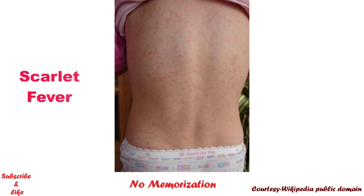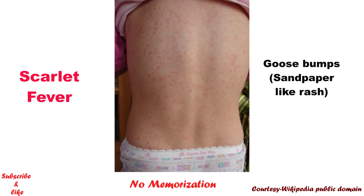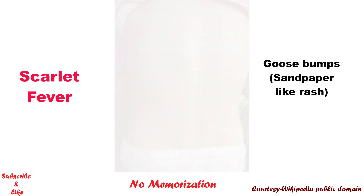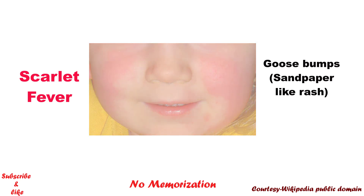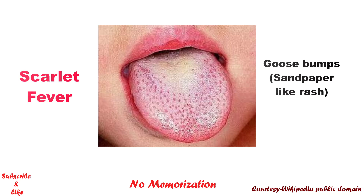Scarlet fever. Here the rash begins 1-2 days following a strep pharyngitis. There will be a diffuse erythematous rash with small papules or bumps, which resembles goosebumps. These bumps feel like a sandpaper-like rash — so the buzzword here is sandpaper-like rash. It also has flushed cheeks and a characteristic strawberry tongue.